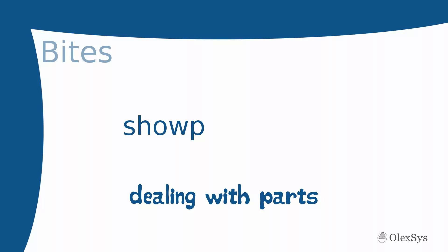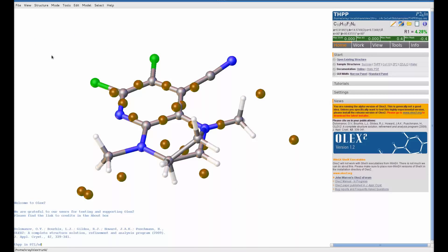If you're working with disorder, you often want to hide it while refining the structure to help model it. When you produce your final pictures, you want to show either one component, the other components, or none of the disorder in your structure, especially if it's a disordered solvent.